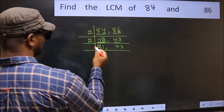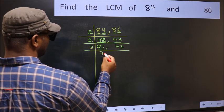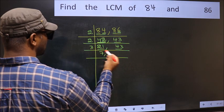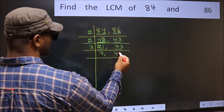Now here we have 21. 21 is 3 times 7 is 21. The other number 43, not divisible by 3, so you write it down as it is.